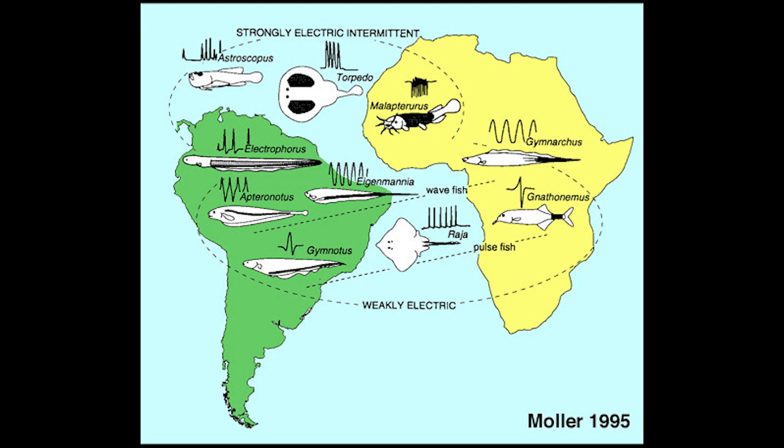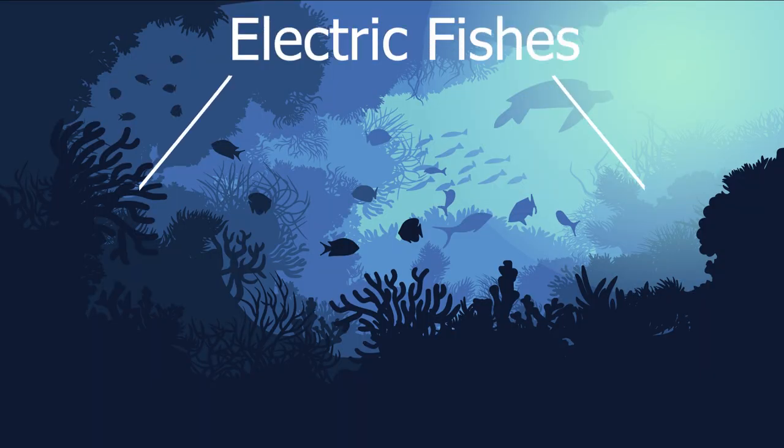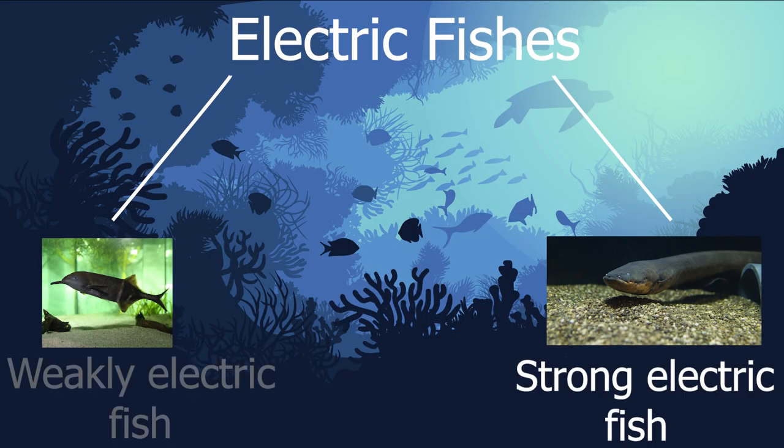Electric fishes are mostly found in freshwater rivers of Africa and South America, including the Amazon rainforest. They are divided into two categories, strong electric fish and weak electric fish.